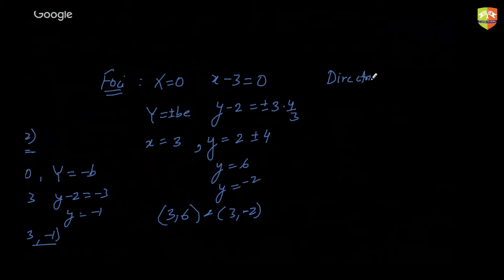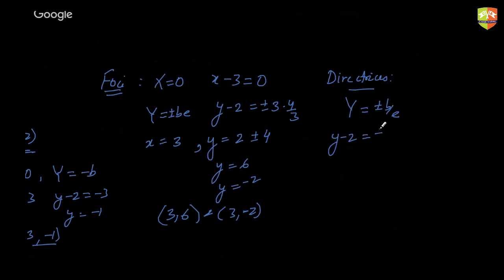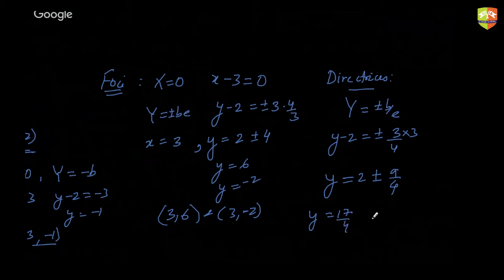For directrices: Y = ±b/e, so y − 2 = ±9/4, giving y = 2 ± 9/4. Therefore y = 17/4 or y = −1/4 are the equations of the directrices.